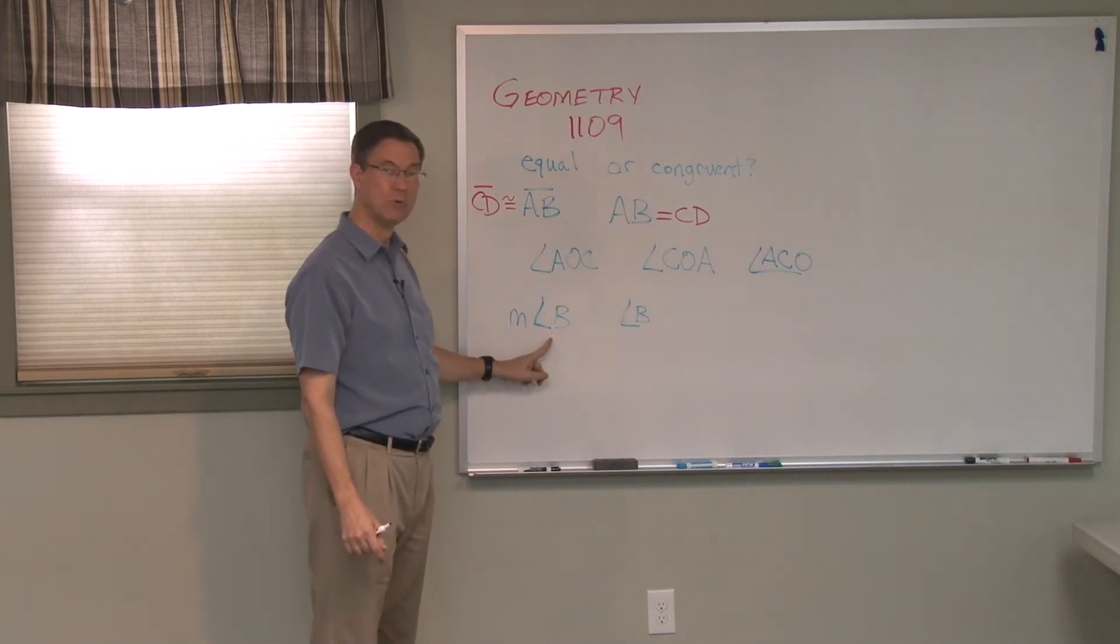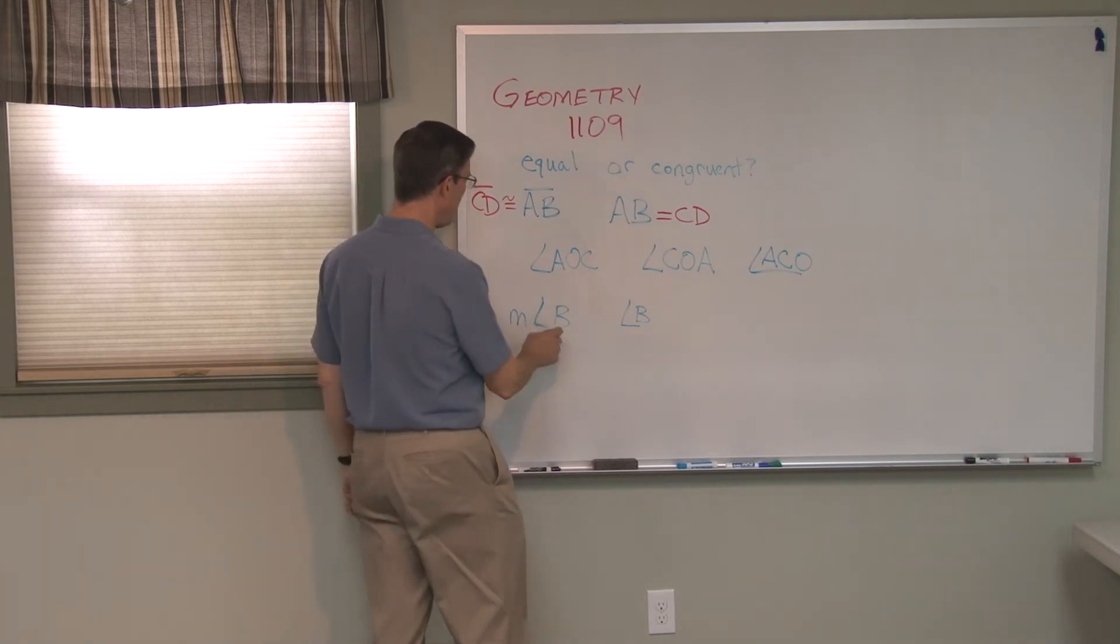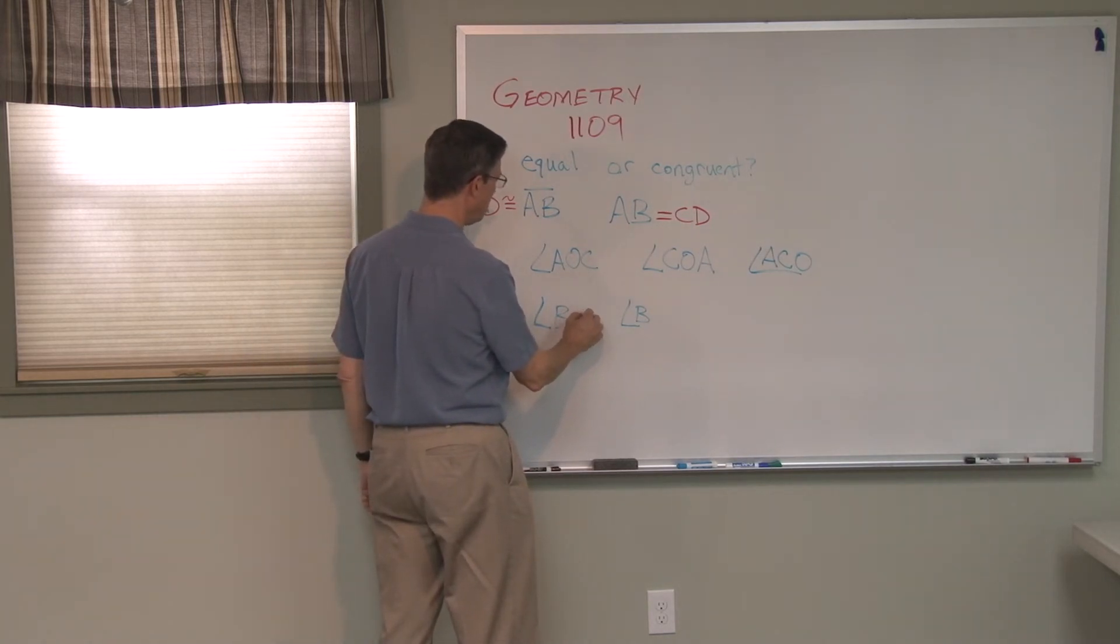But if we're talking about how many degrees are in angle B, then we have to put an m in front of this. So we could say measure of angle B equals 90 degrees.